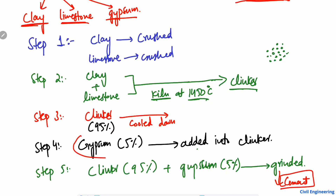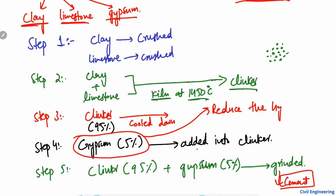Now, what is the role of gypsum added to the clinker? The main role of gypsum is to reduce the hydration rate of the cement. We add gypsum because otherwise the setting time of the cement is very fast. For this reason, we add gypsum to reduce the initial hydration rate of the cement.